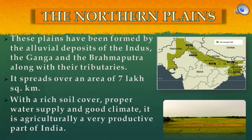The Northern Plains have been formed by the alluvial deposits of the Indus, the Ganga and the Brahmaputra along with their tributaries. It spreads over an area of 7 lakh square kilometers. With a rich soil cover, proper water supply and good climate, it is agriculturally a very productive part of India.